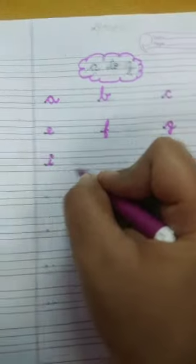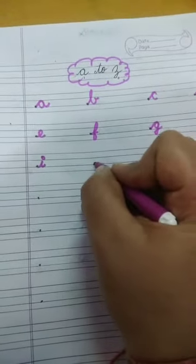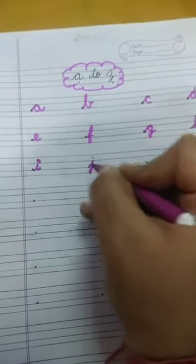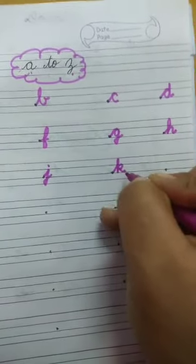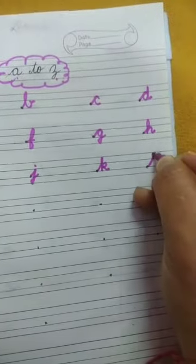I, I, Ice Cream. J, J, Joker. K, K, Kite. L, L, Lion.